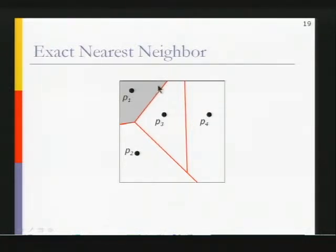So if I have a query point lying in this region, its actual nearest neighbor will be P1. And similarly for the other partitions. I have a question.